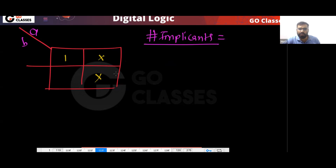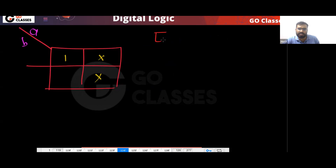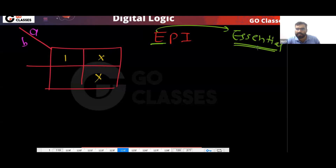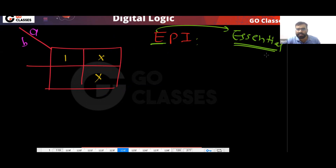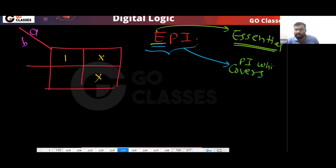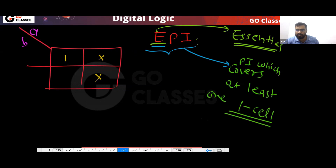When you have don't cares and I ask you for essential prime implicants, remember the definition of EPA does not change. The name itself says essential. The definition is fixed: an EPA is a prime implicant that covers at least one 1-cell uniquely.